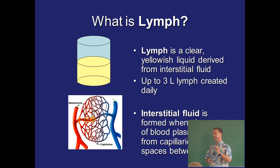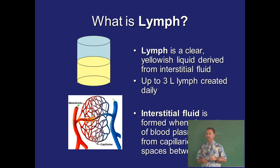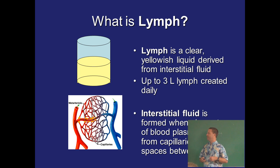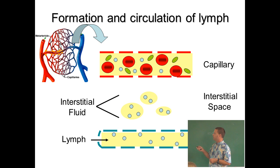Lymph is a clear fluid, sort of straw-colored. There aren't a whole lot of cells in there — any cells that are present are probably lymphocytes. Mainly it's water and proteins, and also a little bit of ions and electrolytes. Remember that lymphatic fluid was derived from blood that was filtered through capillaries, first became interstitial fluid, and then was sucked up by our lymphatic vessels.